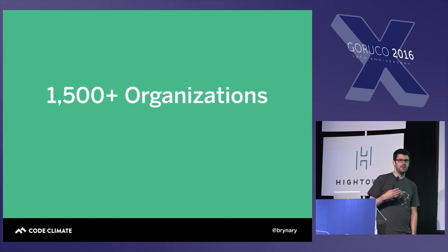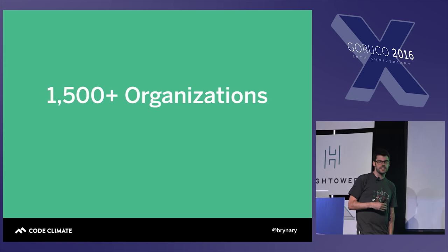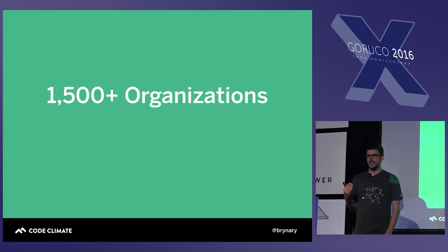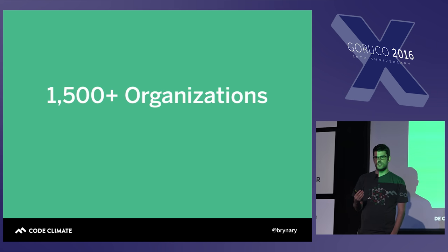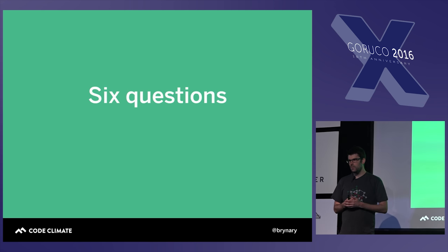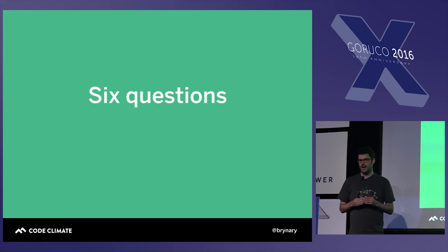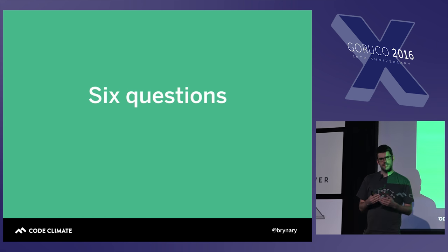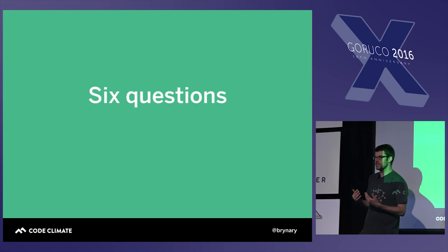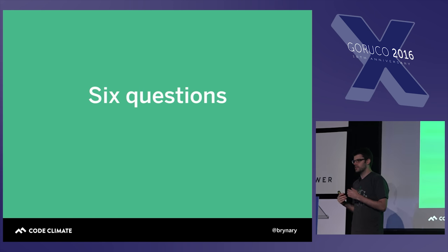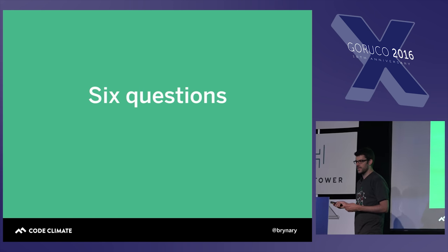We have a little bit of experience working with code quality and the questions that it poses. There are over 80,000 repositories analyzed by Code Climate with static analysis every day, from over 75,000 developers across 1,500 organizations. That is where a lot of the experience we're discussing today is drawn from. We thought it would be interesting to look at six questions related to code quality that might have non-obvious or interesting answers.